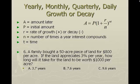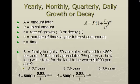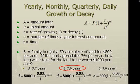For number six, a family bought a 50-acre piece of land for $800 per acre. The land appreciates 3% per year. How long will it take the land to be worth $1,000 per acre? A is $1,000, P is $800, the rate is 0.03, and N is 1 because it's compounding once a year. In the exponent we have 1 times each answer choice — 3.7, 7.6, or 9.6 years. Type in each one and see which gets closest to $1,000. Answer B, 7.6 years, is correct.